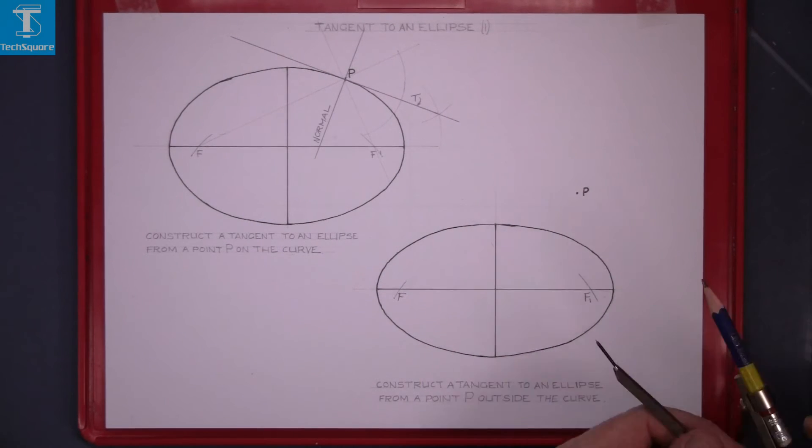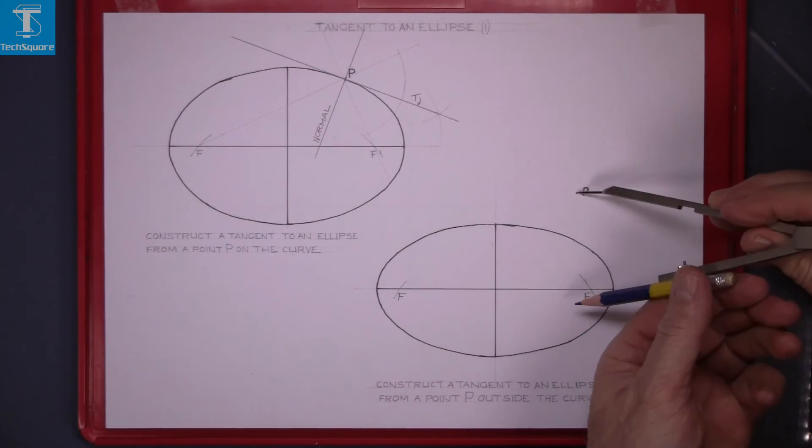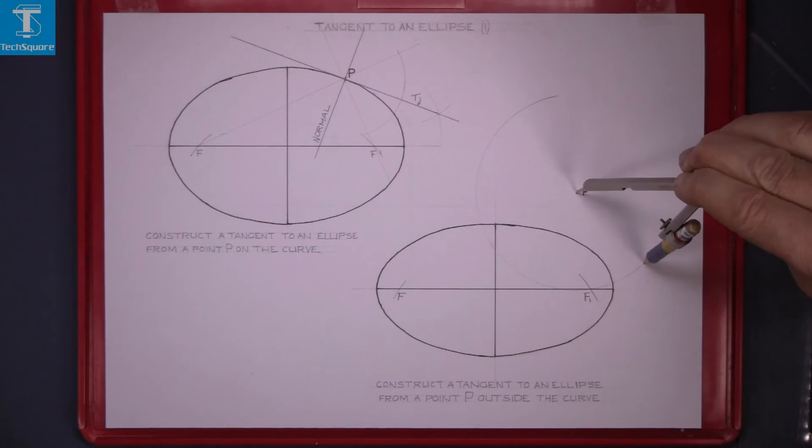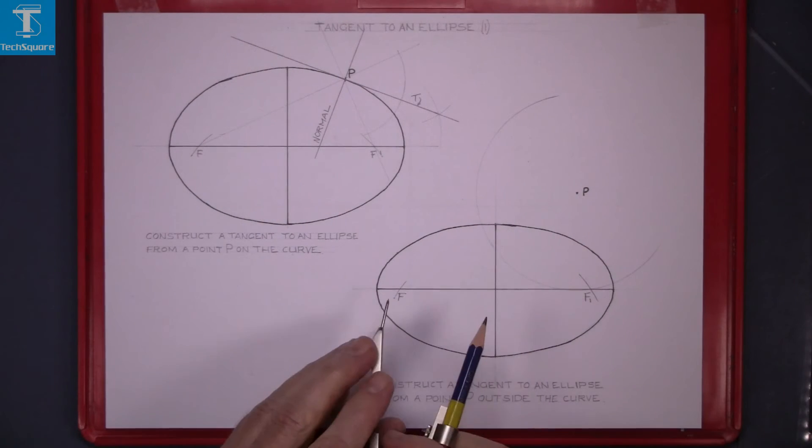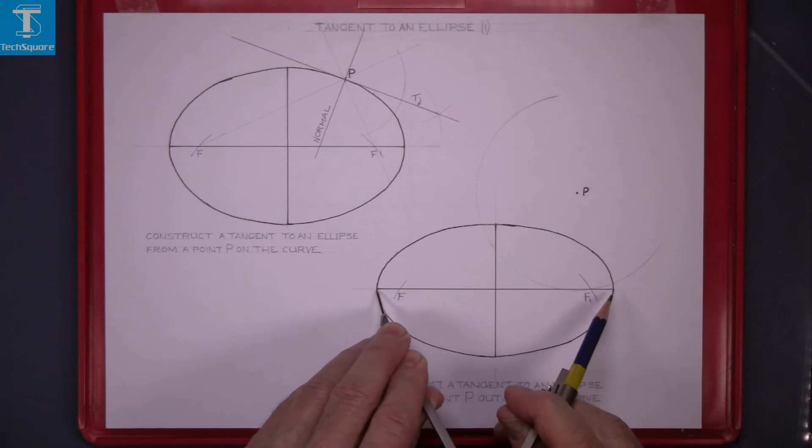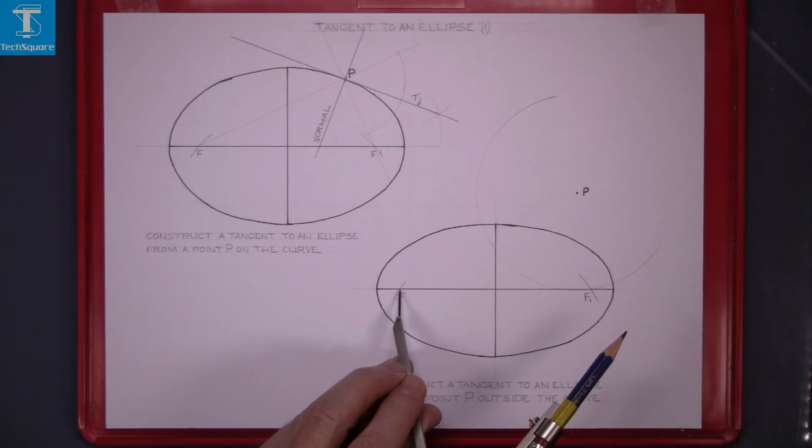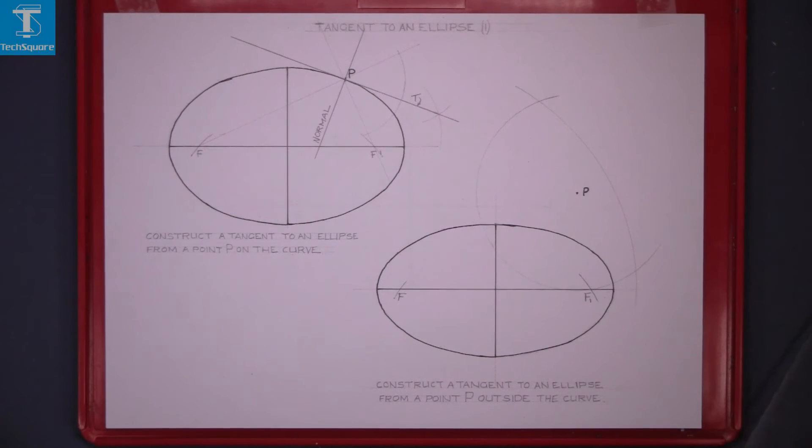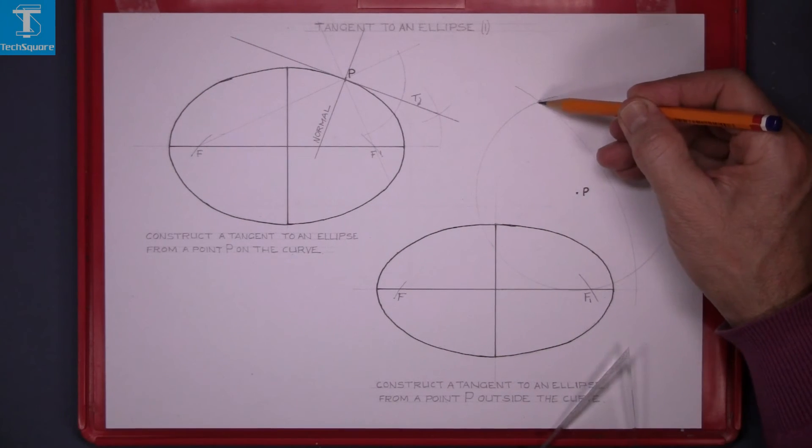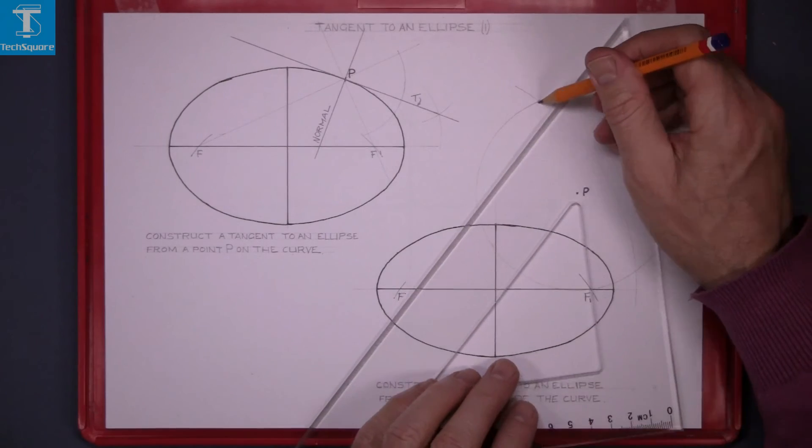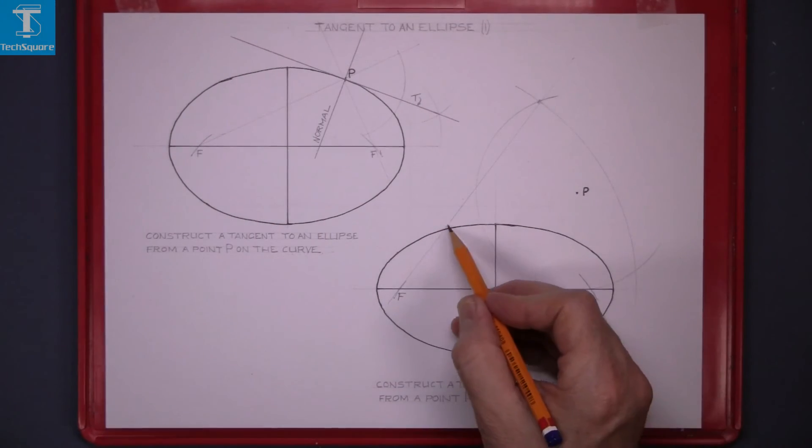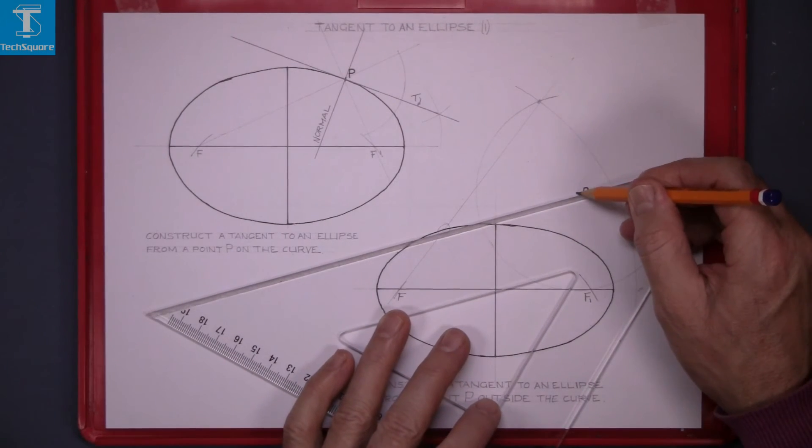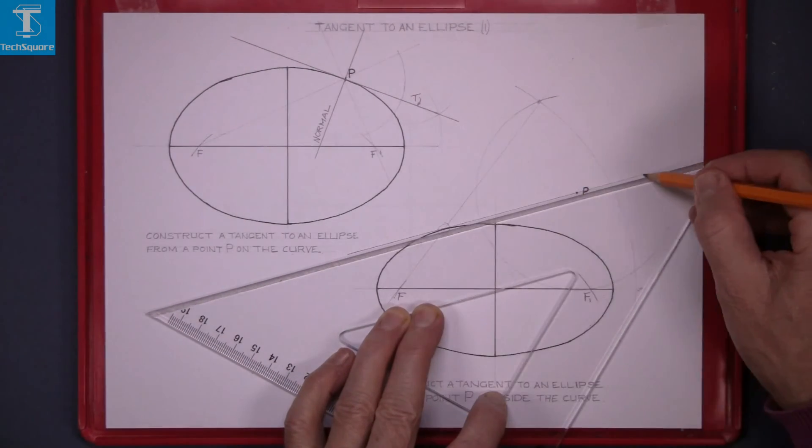With the compass set from P to the nearest focal point which is F1, draw an arc. Set the compass to the major axis. Put the pointer compass in F and draw an arc to intersect the arc you had drawn earlier. Join that point to the focal points. That gets a point on the curve which is the point of contact. Draw from P through that point and that's the tangent.